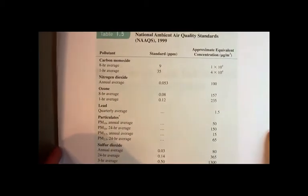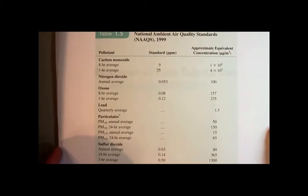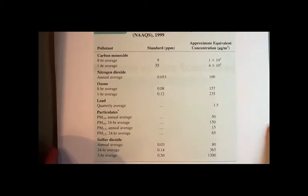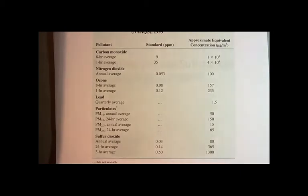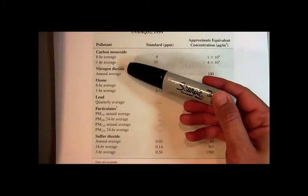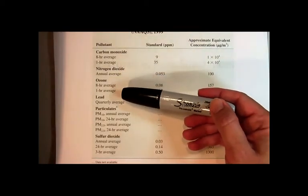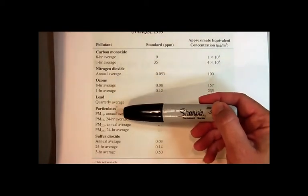Some air quality standards, what do we consider the amounts of these particular pollutants that could be found in the atmosphere, what are the safe limits of the concentrations, I should say. So some of the pollutants listed here, for example, are carbon monoxide, nitrogen dioxide, ozone, lead, particulates, and sulfur dioxide.